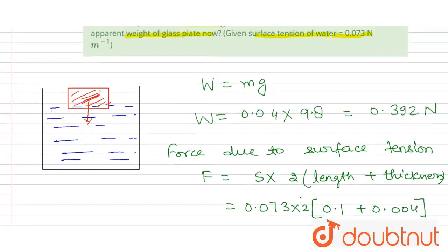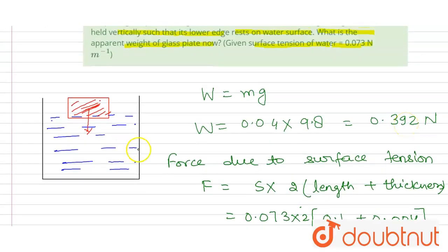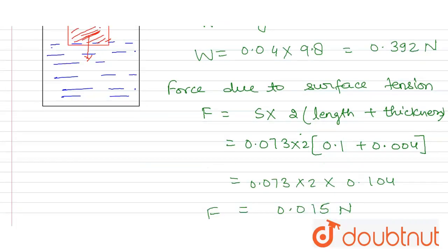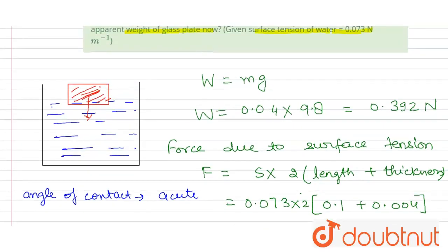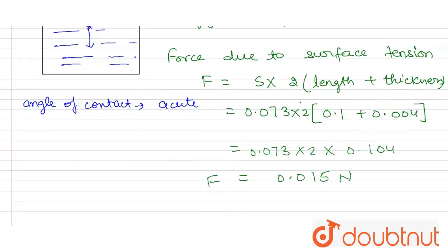The angle of contact is an acute angle. Since the angle of contact is acute, the force due to surface tension will also act in the downward direction, and the weight is also in the downward direction.